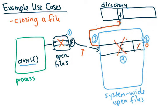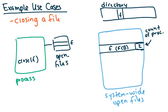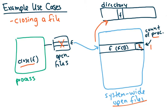Now consider closing a file when another process is also using it — so the count is two. We remove the per-process entry, keep the pointer, and decrement the count to one. But since it's not zero, we don't copy anything back to the directory and don't remove it from the system-wide open file table. You have to keep in mind what other processes might have that file open. If you remove it prematurely from the system-wide table, the other process will have issues when it tries to close the file and write the control block back.